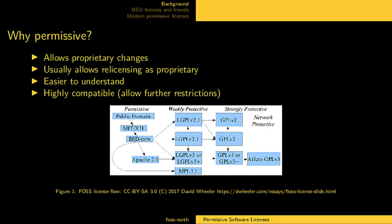So why would you use a permissive license? There are some features with permissive licenses that you don't have with copyleft or protective licenses. A permissive license will allow you to make your changes proprietary, and it usually also allows you to re-license the software as proprietary. These licenses are also very short and easy to understand, and as the chart shows, they are highly compatible with other licenses. Because you're allowed to do almost anything, you can pull permissively licensed code into software with more restrictions and it will still work, while the opposite is not true.